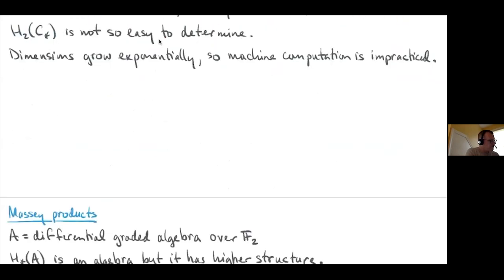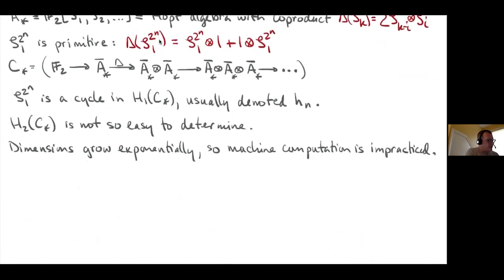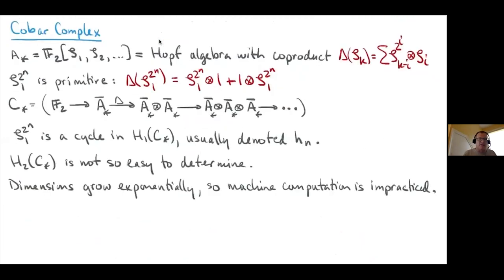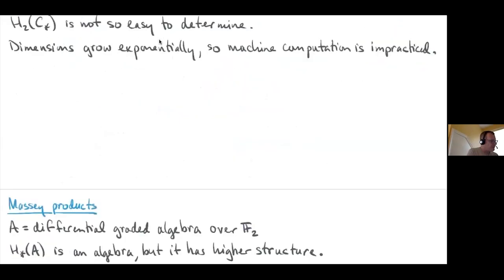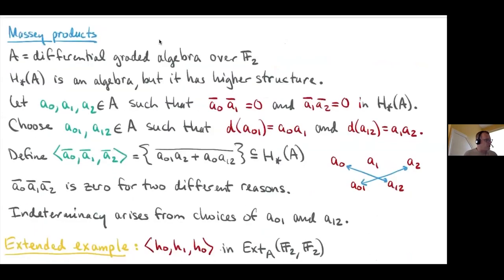We're going to spend some time playing around with the cobar complex today, because picking up these elements and handling them yourself gives valuable experience and insight into how things work in higher dimensions. But before that, I want to dive into Massey products. I've been referring to 'higher structure' throughout these talks, and I want to make specific what kind of higher structure I'm particularly interested in. I find Massey products and total brackets useful for the types of computations I want to carry out.